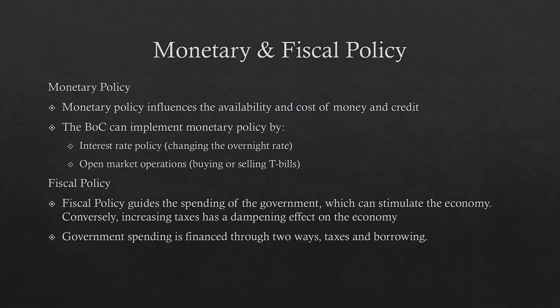Monetary and fiscal policy also play a factor. Monetary policy influences the availability and cost of money and credit. The Bank of Canada can implement monetary policy through interest rate policy — changing the overnight rate — or open market operations by buying or selling T-bills. Fiscal policy guides government spending, which can stimulate the economy, while increasing taxes has a dampening effect. Government spending is financed through taxes and borrowing, both of which influence interest rates and bond rates.